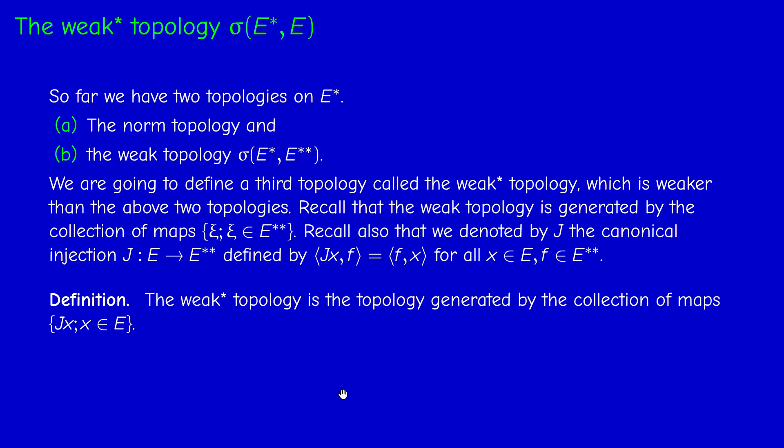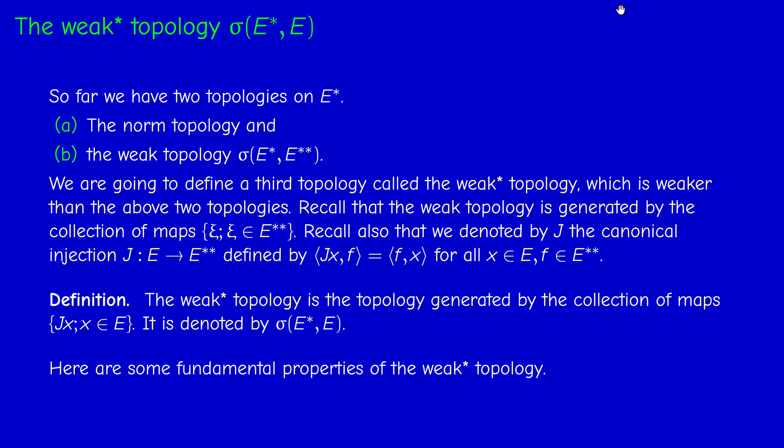The weak-star topology is the smallest topology making all these maps J(x) continuous. These maps are already continuous in the norm topology and the weak topology as well. We denote this topology by σ(E*, E). So now we have three topologies on E*: norm topology, weak topology, and weak-star topology.